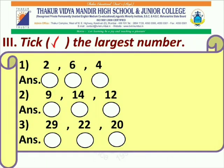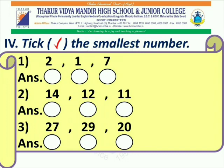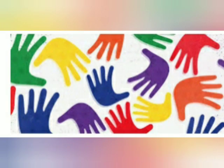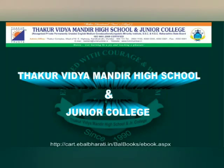In exercise 3, you have to tick the largest number. In set 1, the largest number is 6. In set 2, the largest number is 14. And in set 3, the largest number is 29. So my dear students, I hope you enjoyed learning this interesting topic with me. Keep watching and keep learning something new.